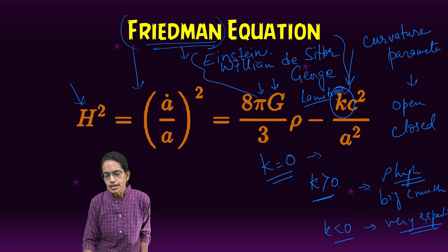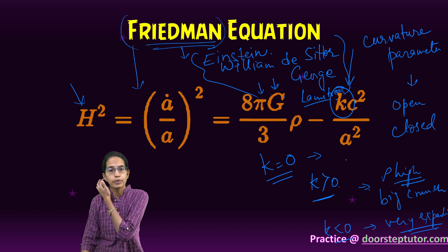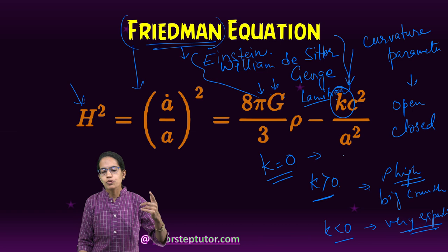But that implies that the density would be equal to the critical value that says that the universe would be expanding at a decreasing rate. And this would be called as an Einstein-de Sitter equation.